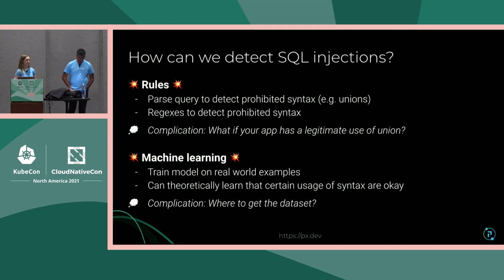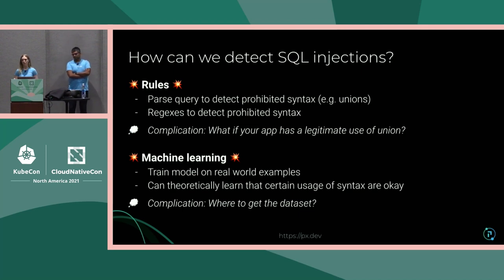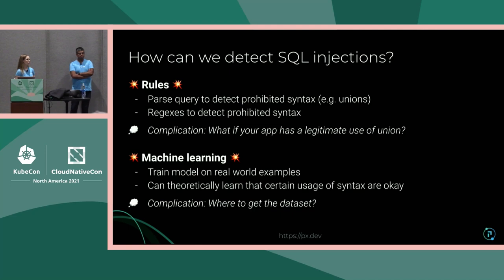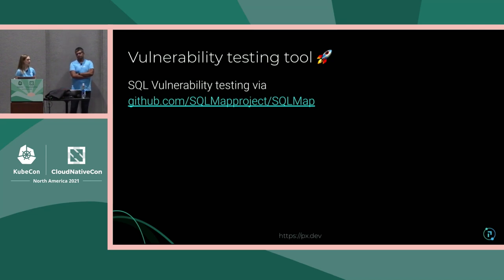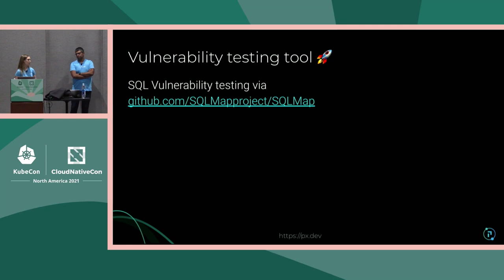For this demo, I'm going to do a rules-based approach with regexes. PxL does support running TensorFlow models, so if you had a dataset available to train a model on detecting SQL injection attacks using machine learning, you could easily plug that in instead of the regex-based approach. In addition to DVWA, a tool helping this demo is SQLMap — a command-line utility that tries to attack your database and figure out if there are vulnerabilities. We're going to be using that today.